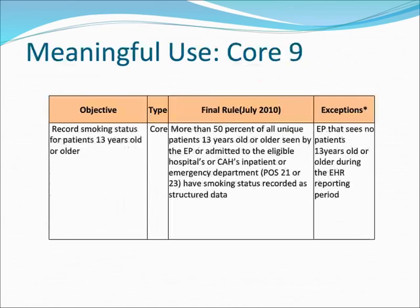Meaningful Use Core 9, Final Rule: More than 50% of all unique patients 13 years old or older seen by the EP who are admitted to eligible hospitals or CAHs in patient or emergency department (POS 21 or 23) must have smoking status recorded as structured data. Exception: EPs who see no patients 13 years old or older during the EHR reporting period.